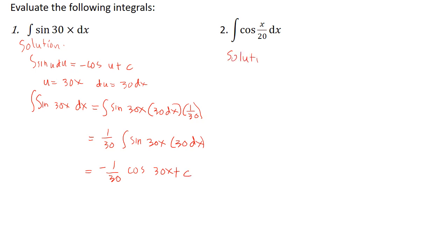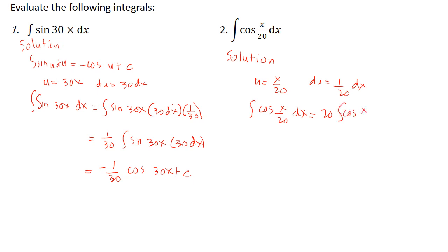Number 2: integral of cos(x/20) dx. Let u = x/20, so du = (1/20)dx. We write: integral of cos(x/20) dx equals (1/20) times integral of cos(x/20) times (1/20) dx, which simplifies to (1/20) sin(x/20) plus C.